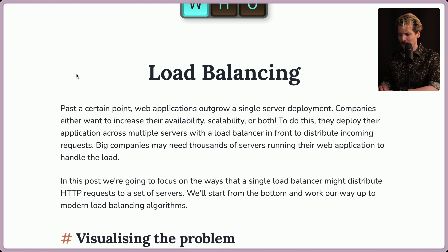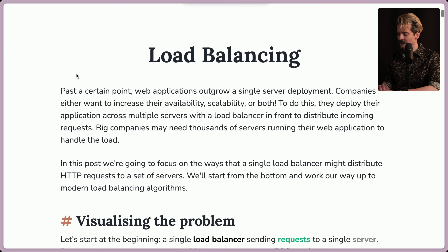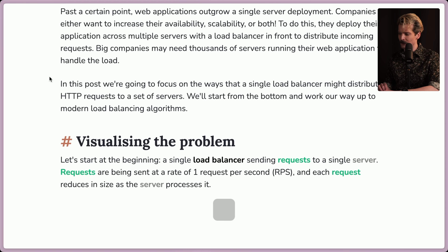Past a certain point, web applications outgrew a single server deployment. Companies either want to increase their availability, scalability, or both. To do this, they deploy their applications across multiple servers with a load balancer in front to distribute incoming requests. Big companies may need thousands of servers running their web applications to handle the load. In this post, we're going to focus on the ways that a single load balancer might distribute HTTP requests to a set of servers. We'll start from the bottom and work our way up to modern load balancing algorithms.